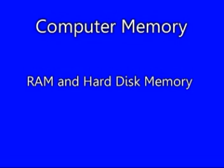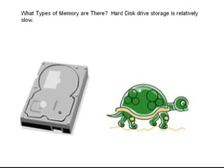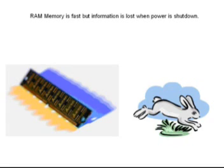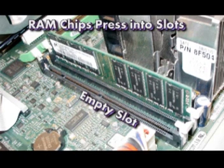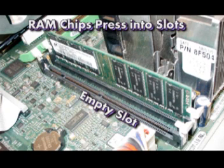There are two basic types of computer memory internal to your computer. Hard disk memory is relatively slow compared to RAM memory. RAM memory consists of electronic chips that slide into slots on the motherboard, the large circuit board in the computer. If there are empty slots, you should be able to add more RAM fairly easily. With no empty slots, new RAM of higher capacity might be installed.